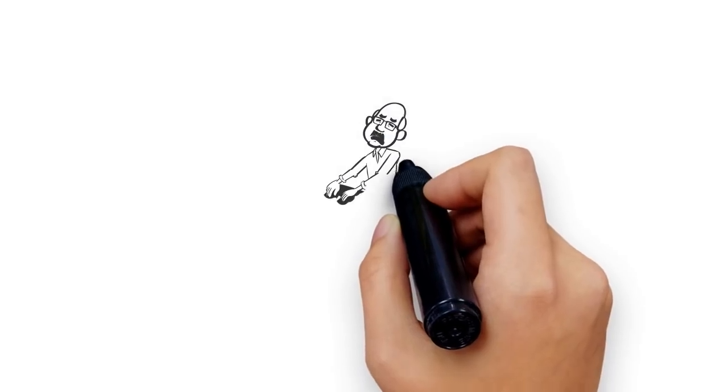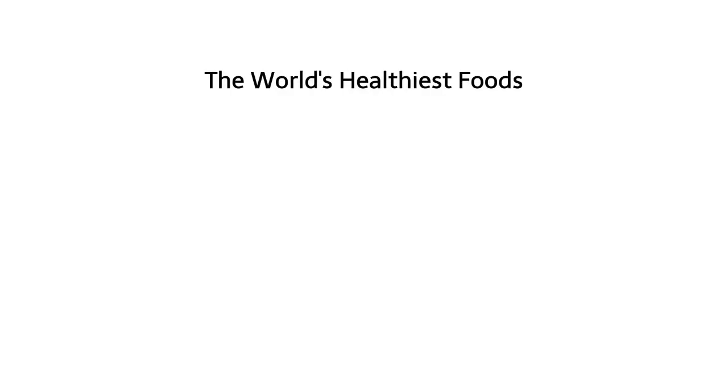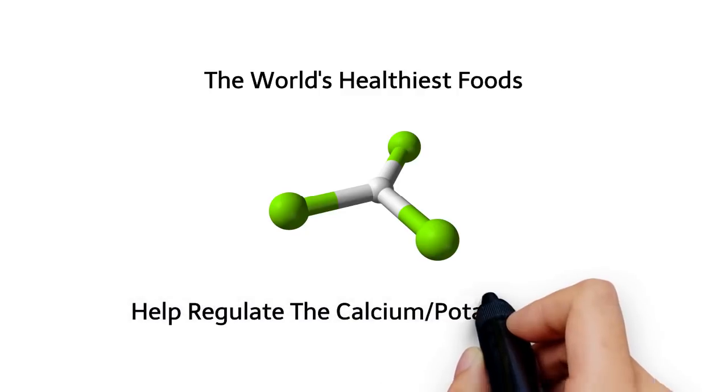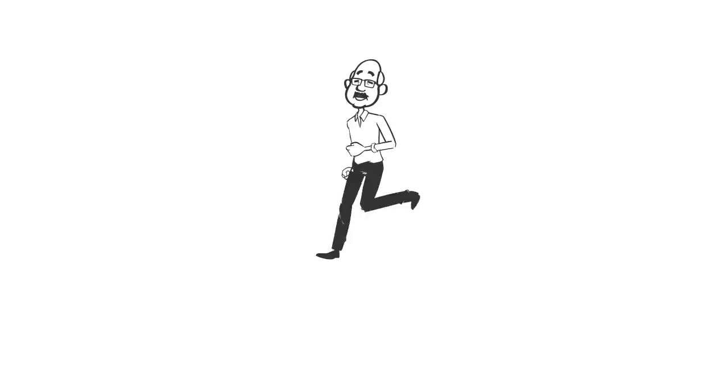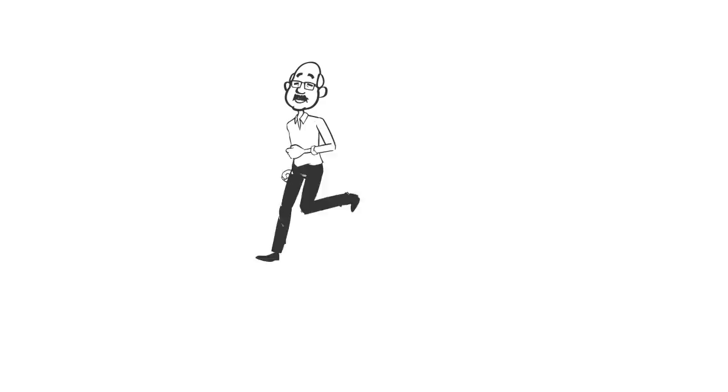Promote bone health. As you get older, bone health becomes a serious concern. According to the World's Healthiest Foods, the high levels of magnesium found in sunflower seeds help regulate calcium and potassium intake, which in turn helps battle osteoporosis, bone loss, and muscle cramps.